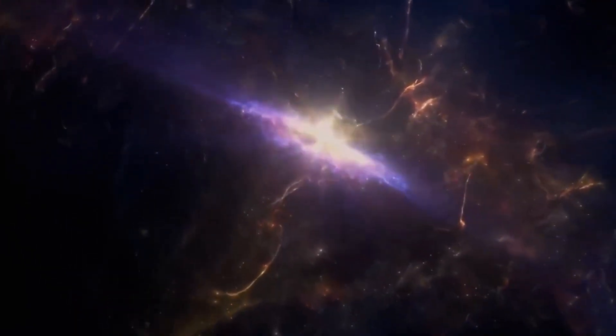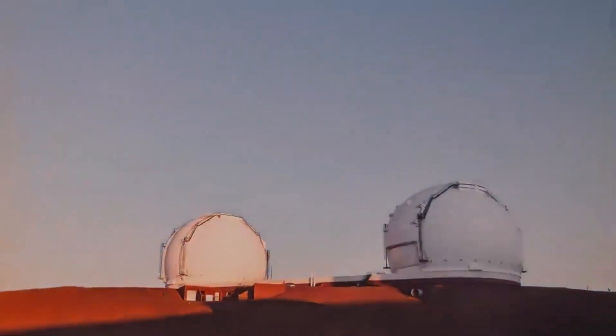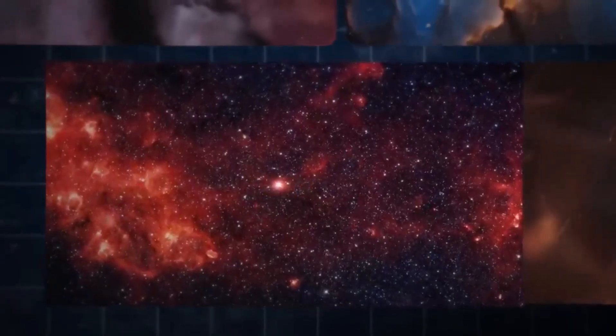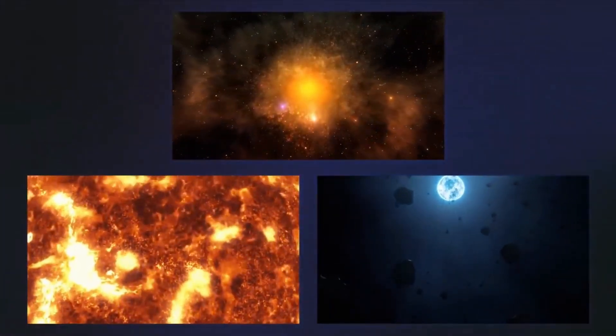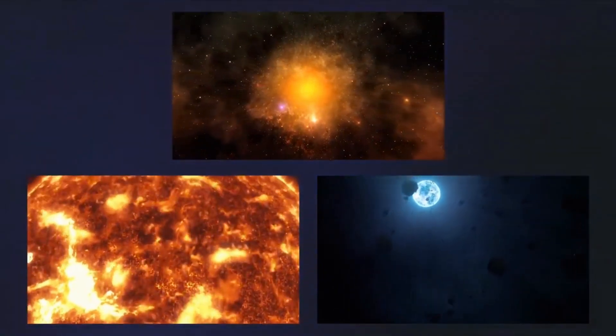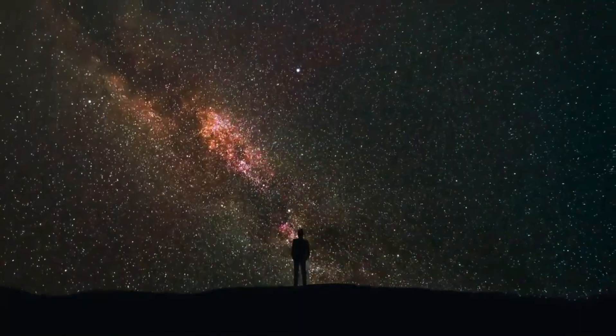Our solar system's Sun regularly ejects mass into space, which is known as solar flares. However, the Sun only expels tiny fragments of its outer atmosphere, known as the corona, giving the phenomenon the name coronal mass ejection, or CME.